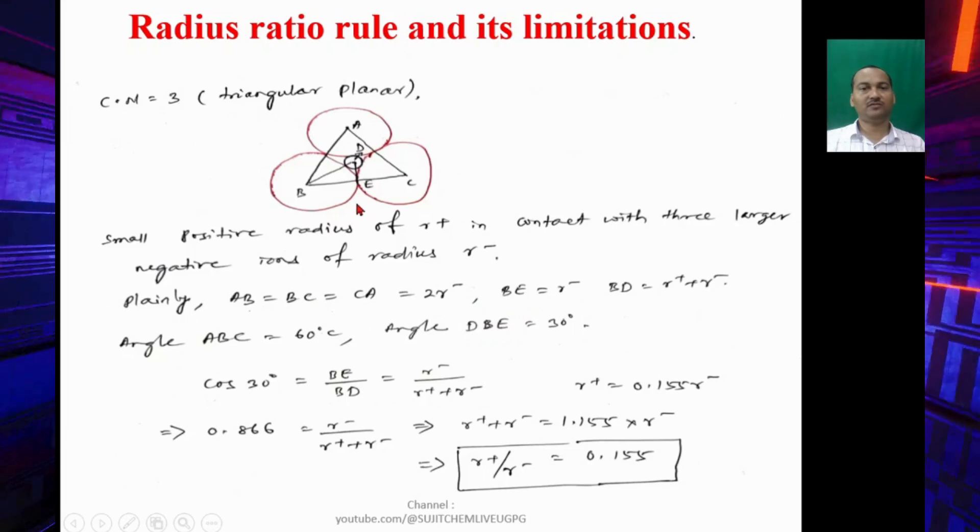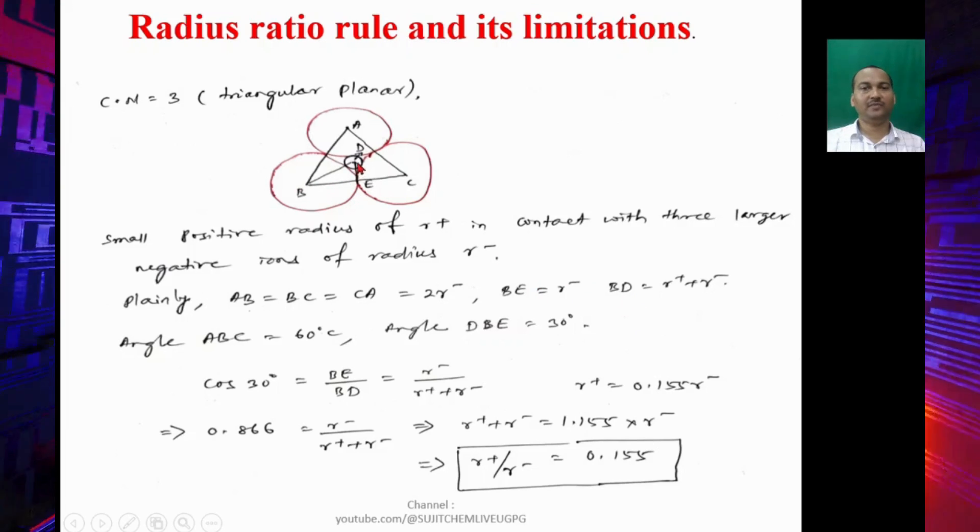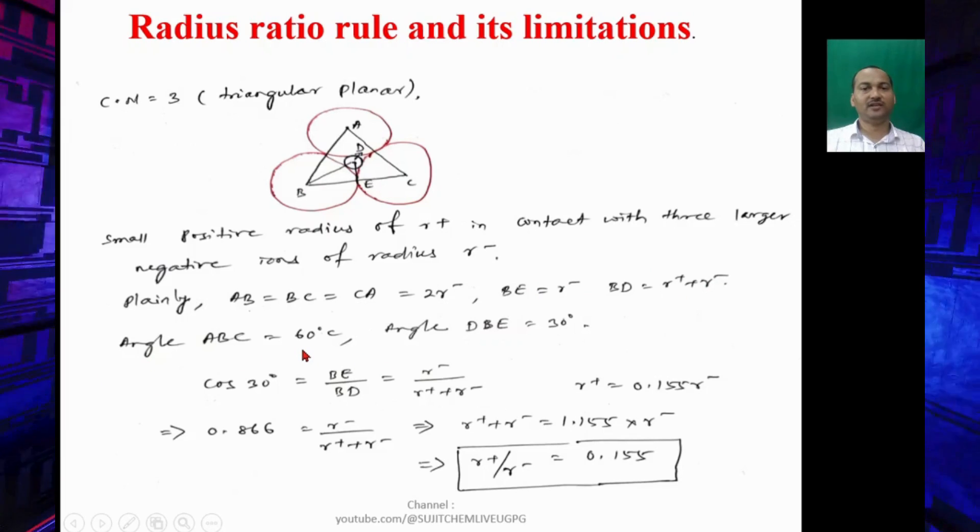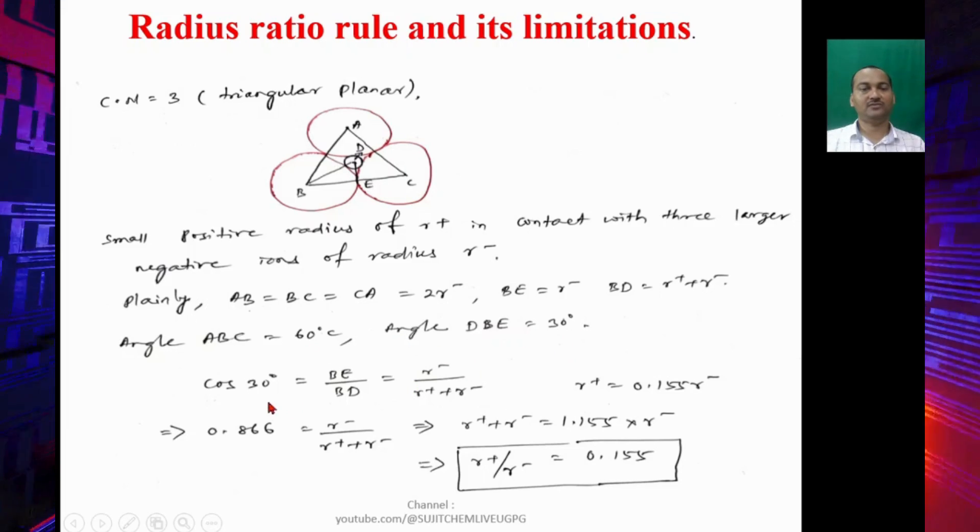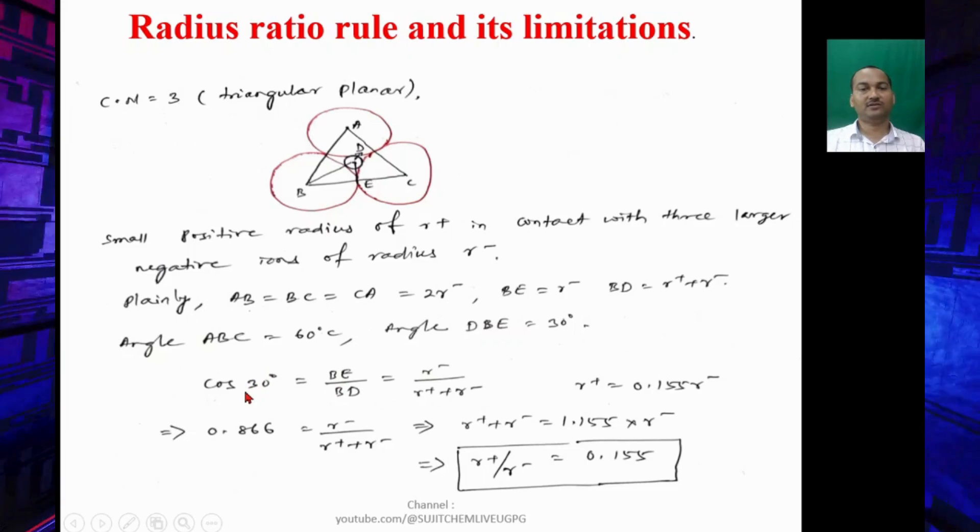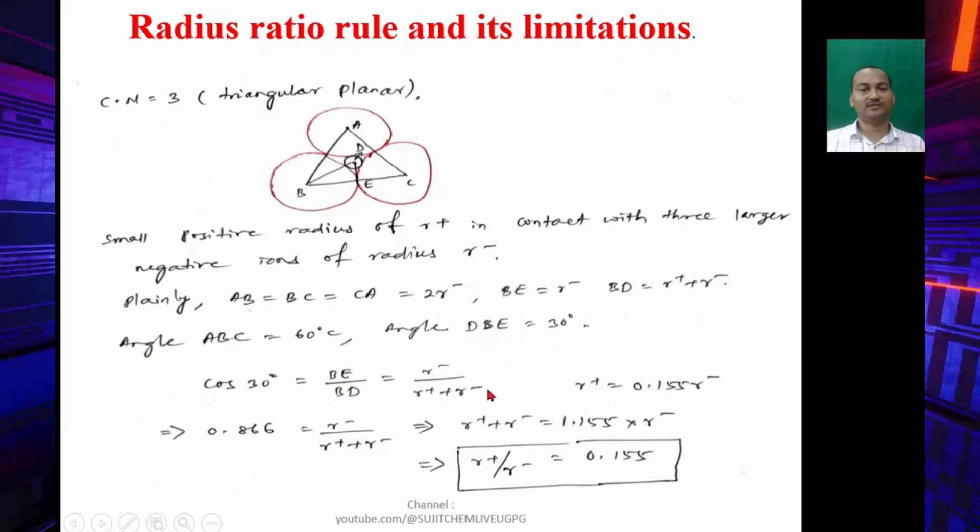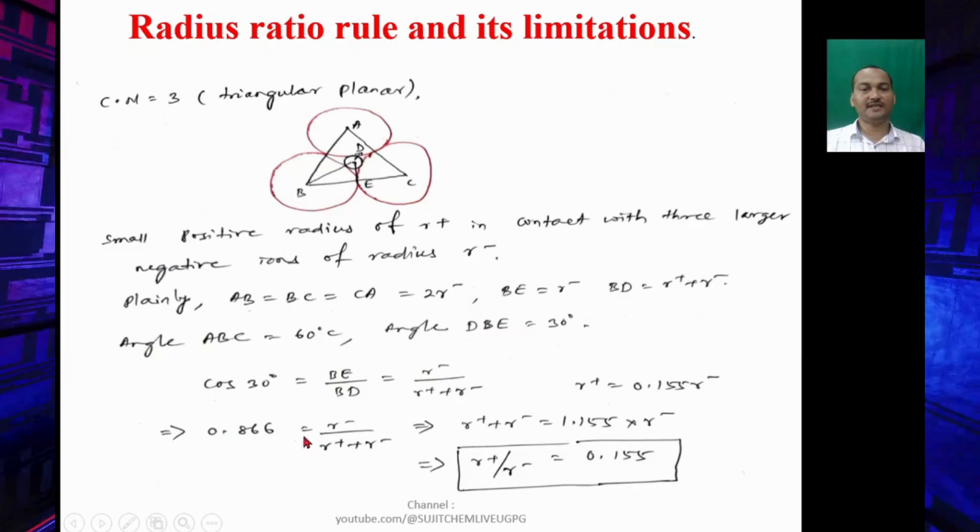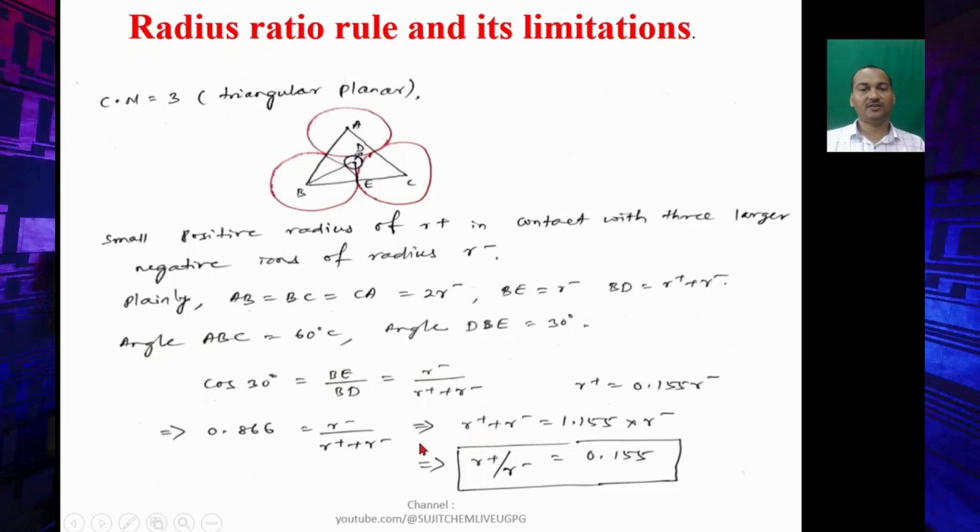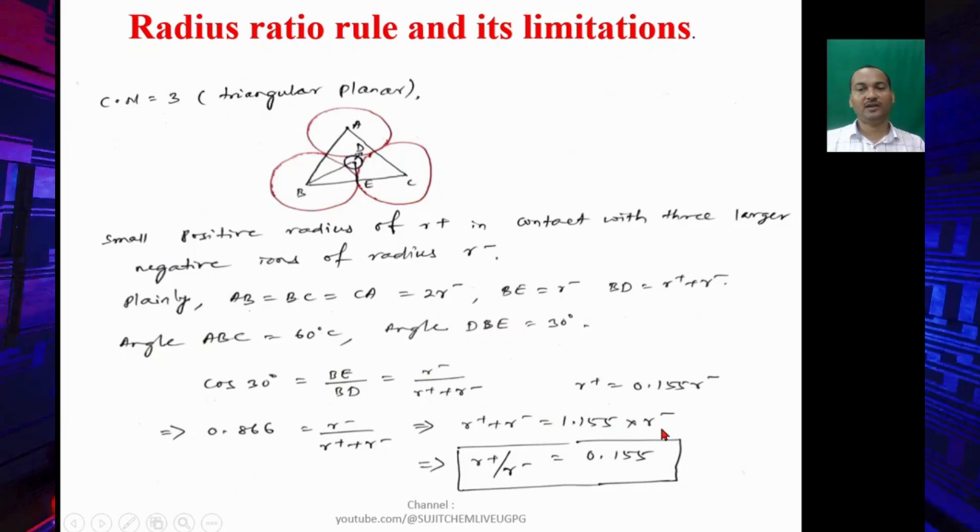BE will be equal to R- and BD will be equal to R- + R+. The angle ABC is 60 degrees and angle DBE = 30 degrees. If we take cos 30°, that is equal to BE/BD, so that is R-/(R+ + R-). Cos 30° value is 0.866 = R-/(R+ + R-). If you take the reverse, R+ + R- = 1.155 × R-.